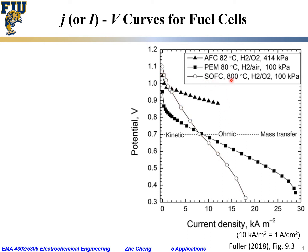The open circle represents the solid oxide fuel cell. Because it uses a ceramic solid electrolyte, it operates at much higher temperature — in this case 800°C — using hydrogen as fuel and pure oxygen as oxidant at ambient pressure, one atmosphere.